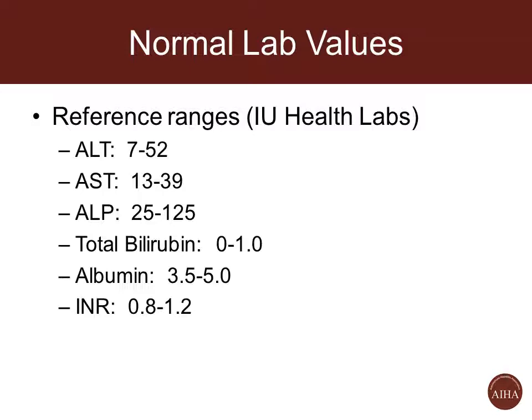This is a brief slide to give a sense of what normal values are, as defined by the IU Health Labs. You see ALT from 7 to 52, AST 13 to 39, Alk Phos slightly higher than that, bilirubin 0 to 1, albumin 3.5 to 5. These reference ranges are devised by individual labs and generally represent 95 percent of the normal population. There are some variations by a person's age, sex, ethnicity, and weight. Some liver experts would caution that the higher ranges for ALT or AST shown here may actually be too high to be considered normal.